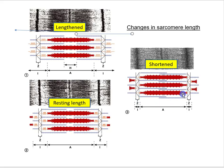On the other hand, a shortened sarcomere occurs when the Z discs are brought in toward each other so much that the thin filaments from opposite sides begin to overlap — something not seen at resting or lengthened positions. It's like people walking toward each other on a sidewalk who step aside just before crashing. So the sarcomere can exist at resting length, a lengthened position, or a shortened position, with various degrees in between.